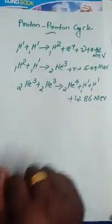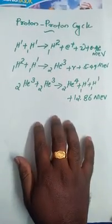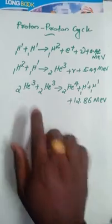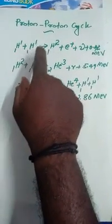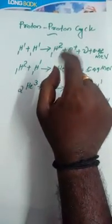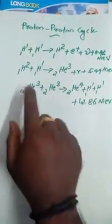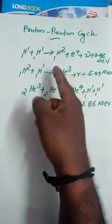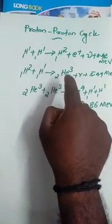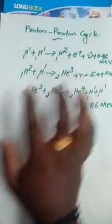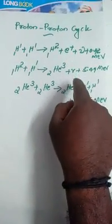This is the proton-proton cycle. H1 is a proton. A deutron is a positron, a neutron is an energy. H2 is an isotope, H3 is E-n.